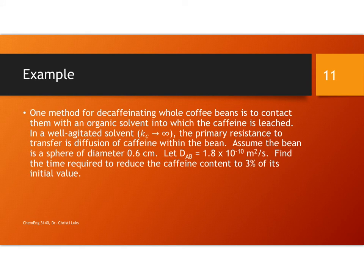Now, we're going to be doing this to solve this problem here that states that one method for decaffeinating whole coffee beans is to contact them with an organic solvent into which the caffeine is leached. In a well-agitated solvent, Kc goes to infinity, and so the primary resistance to transfer is going to be diffusion of caffeine within the bean.